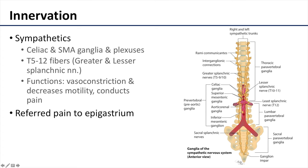The sympathetic input to the duodenum comes from the thoracic splanchnic nerves, in particular the greater and lesser splanchnic nerves. The greater typically arises from T5 through T9. The lesser typically receives fibers from T9 and T10, sometimes T9, T10, and T11.